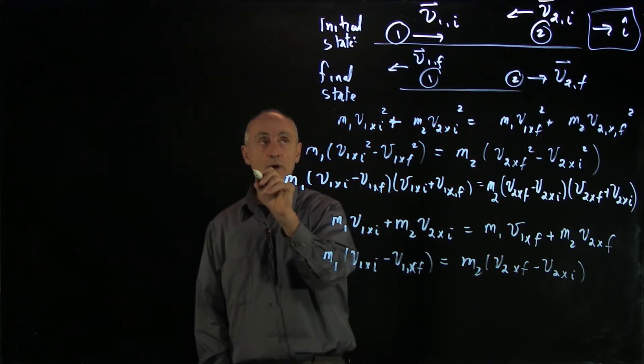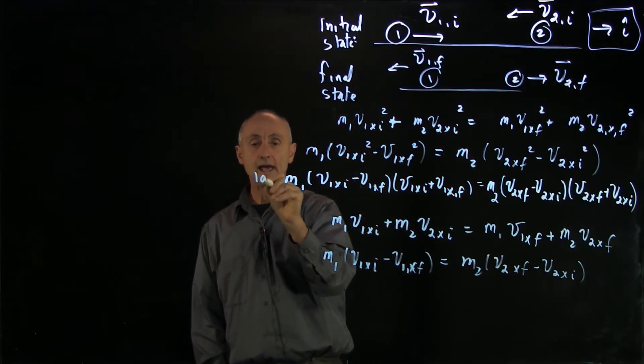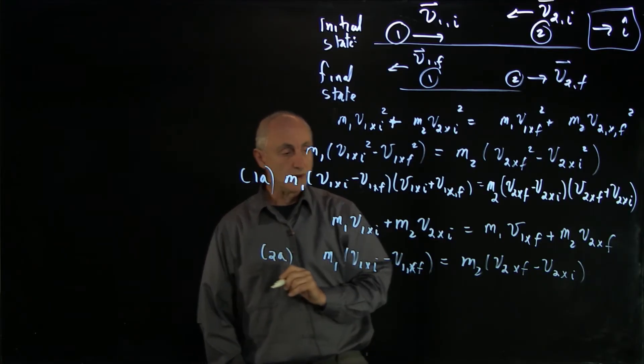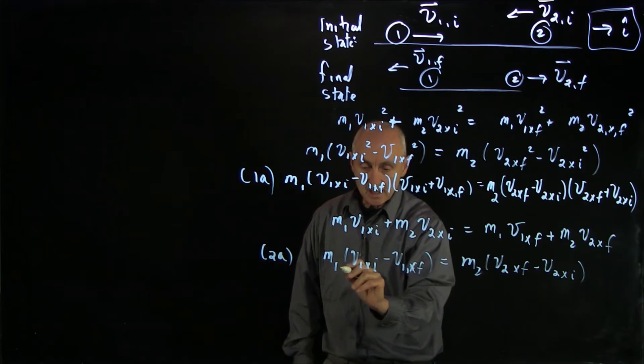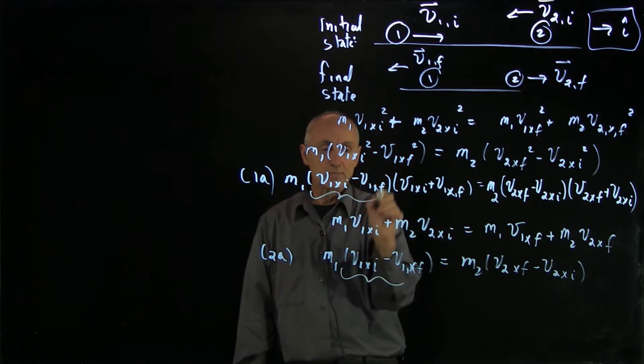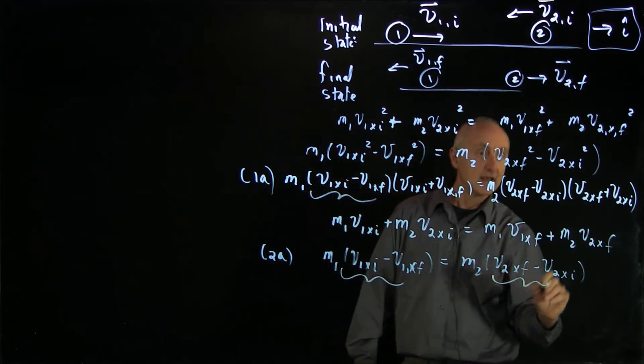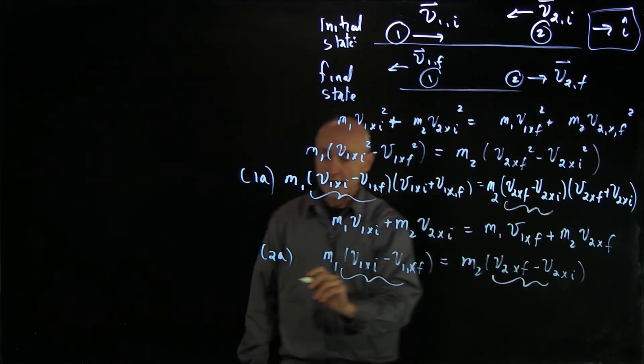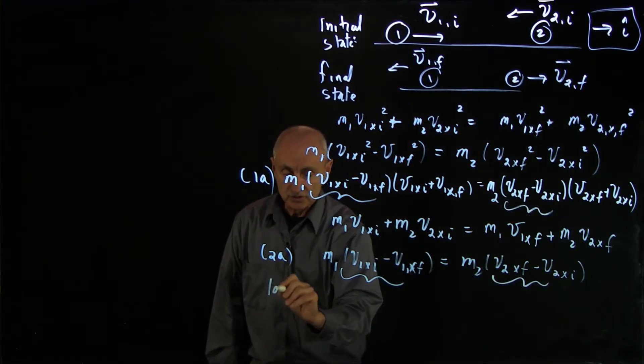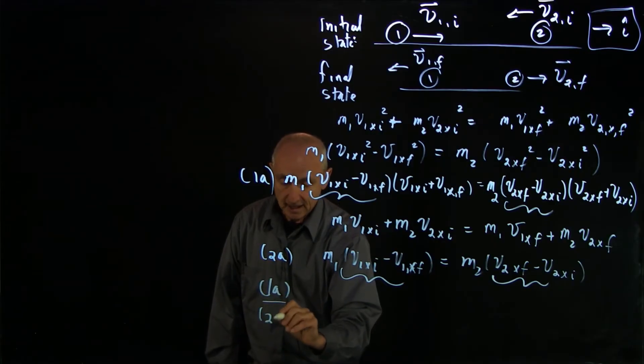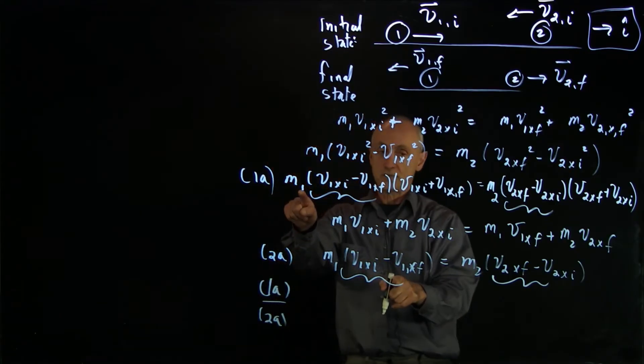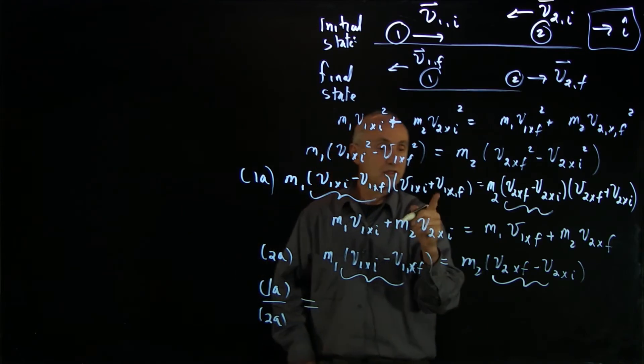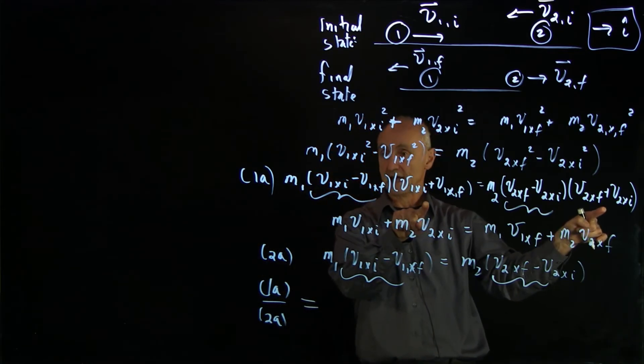Now, let's call this equation 1a and our momentum factored as 2a. Now if you notice, the momentum piece is appearing exactly there and exactly here. So when I divide 1a by 2a, and I'll just symbolically represent that, then these two pieces cancel.